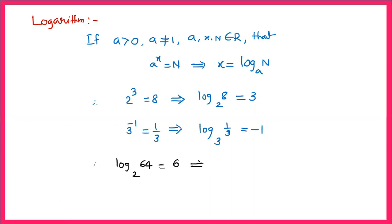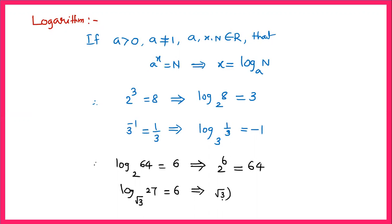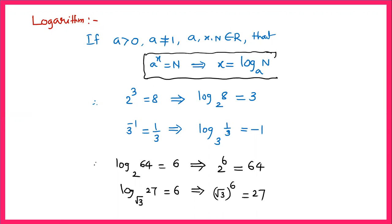Here the base is 2, so 2 raised to the power of 6 will be equal to 64. Similarly, logarithm of 27 to the base root 3 will be equal to 6. This we can write as root 3 power 6 will be equal to 27. So based on the definition of logarithm, a power x equals n, then x can be set as log n to the base a.